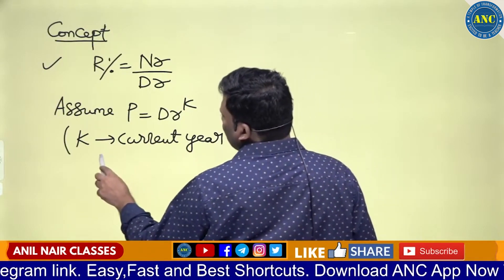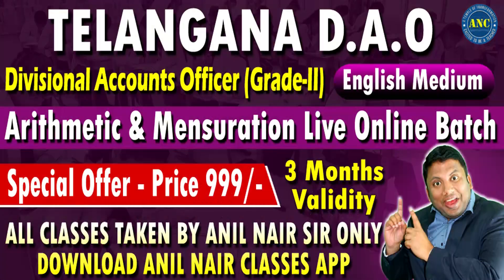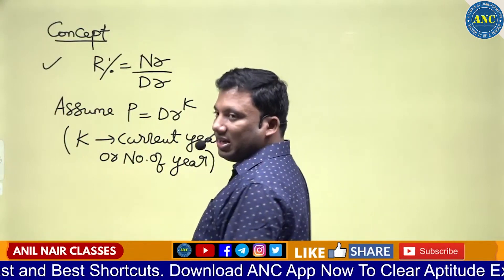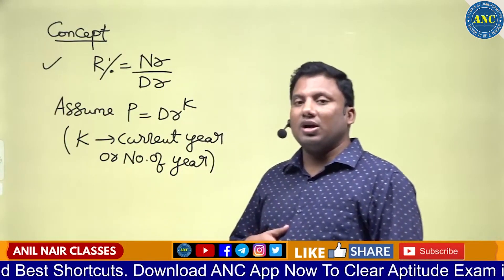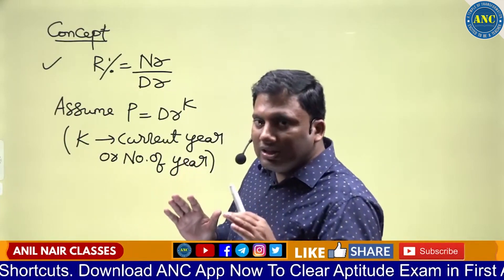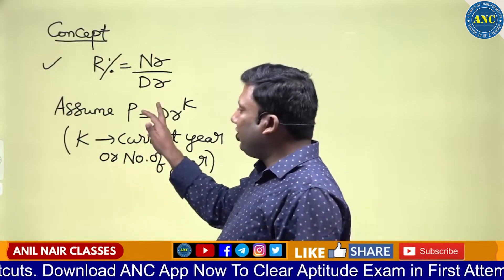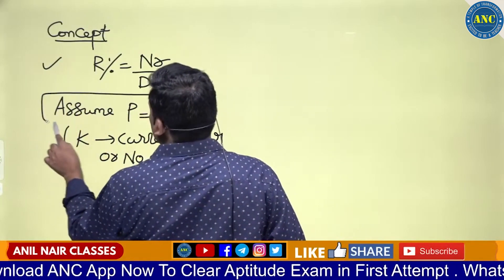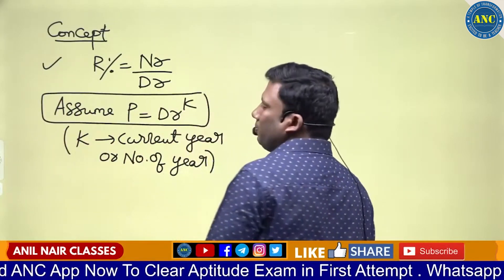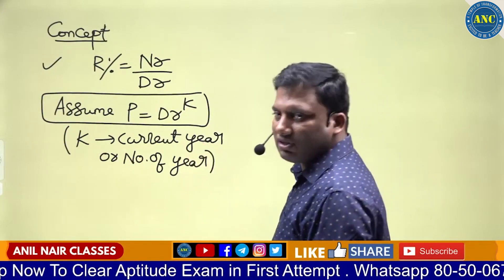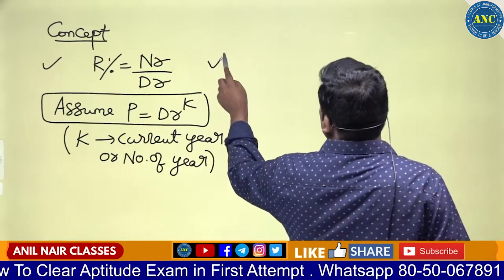K refers to the current year or the number of years. For example, if the second year is ongoing or two years have been completed — anything with respect to the time period — take the principal as denominator power k. This is the first point.